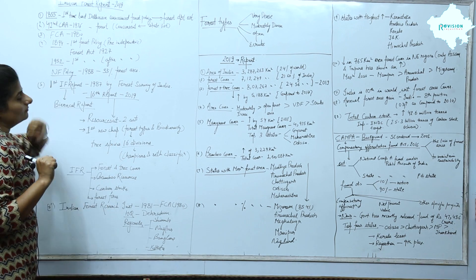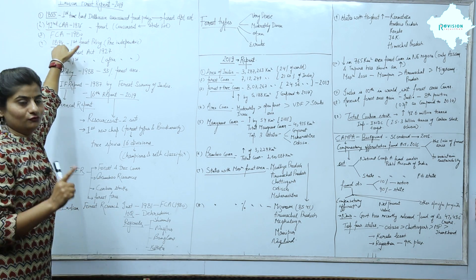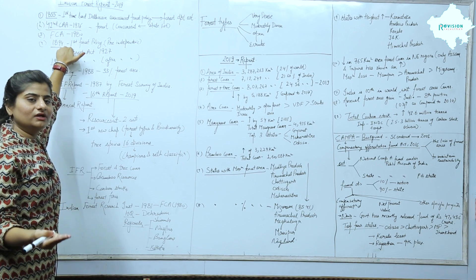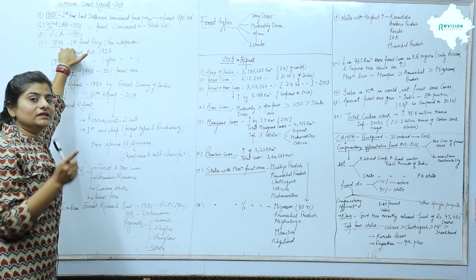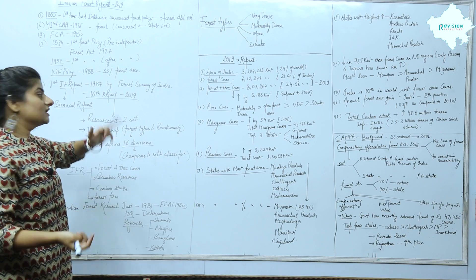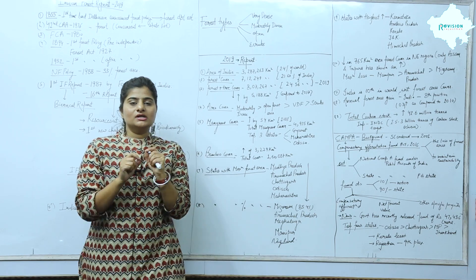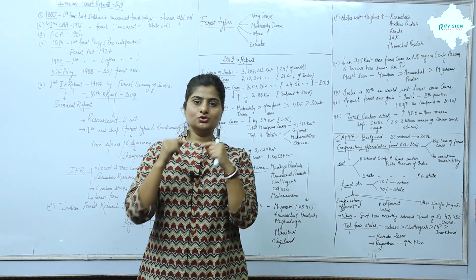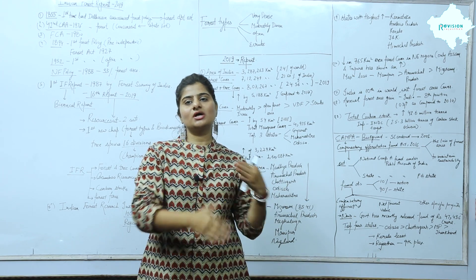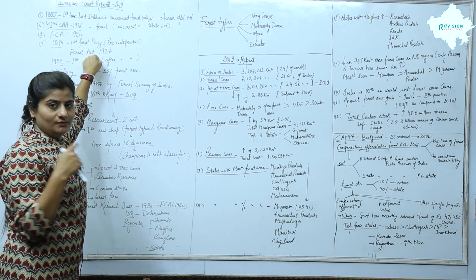In pre-independence, the first Forest Policy came in 1894. So if we look at the first Forest Policy — pre-independence and post-independence — it came in 1894. The first Forest Policy after independence came in 1952. In exam questions, you must pay attention to whether they are asking about pre-independence or post-independence. Also, the Forest Act of 1927 has been studied.